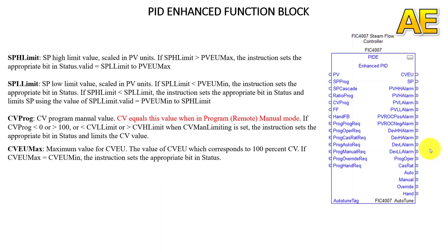The next input is CV EU max — the maximum value for CV EU, corresponding to 100% CV. If CV EU max equals CV EU min, the instruction sets the appropriate bit in status.